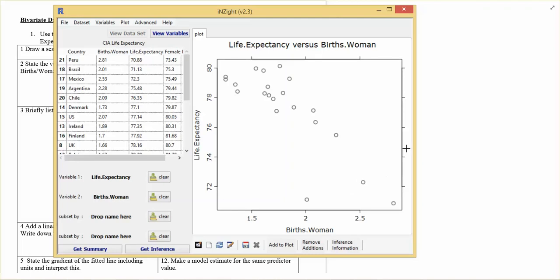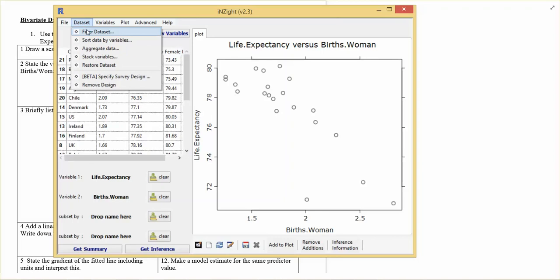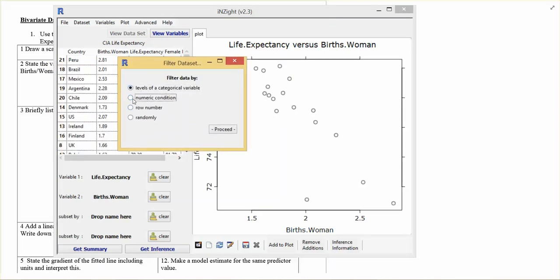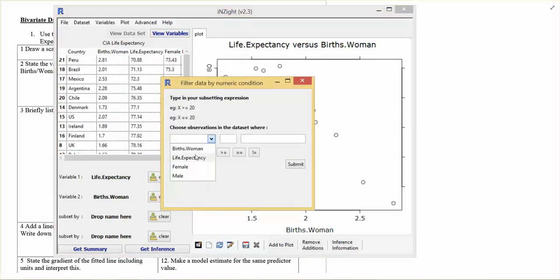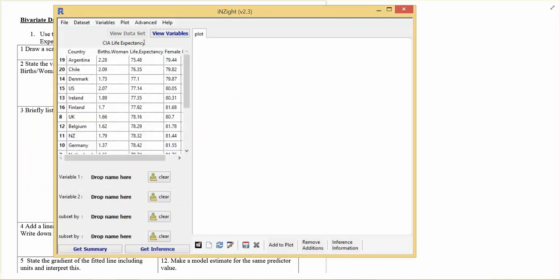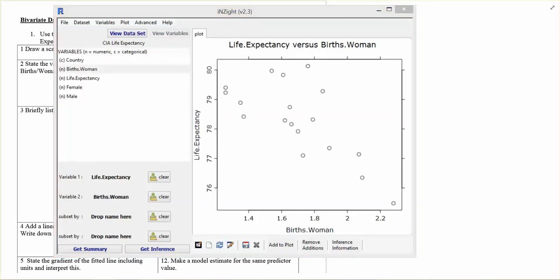If you remove them from the data set, you can do that by going data set and I want to go filter data set, numeric condition. I'm going to get rid of anything that's below 73 years life expectancy. So choose observations in the data set. I want to keep the ones in the data set that have a life expectancy greater than 73 years. So if I do that and I have to add the variables back again.